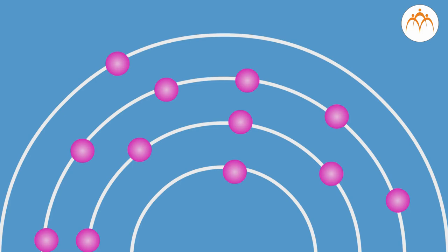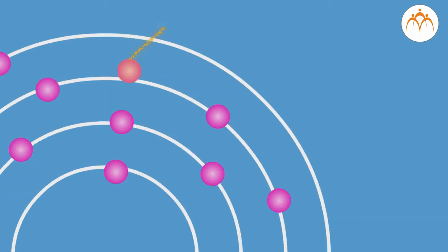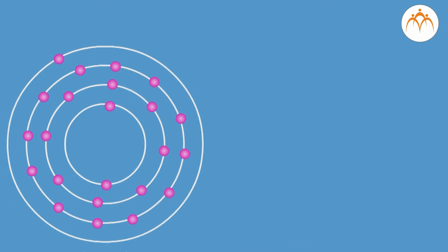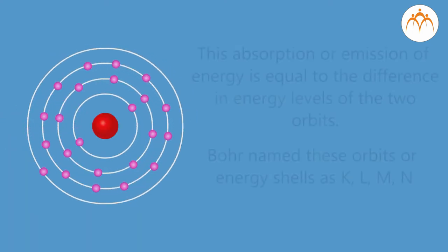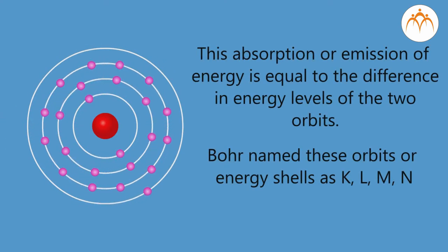Third postulate - when an electron jumps from an inner orbit to an outer orbit, it absorbs energy. When an electron jumps from outer orbit to inner orbit, it emits energy. This absorption or emission of energy is equal to the difference in energy levels of the two orbits.